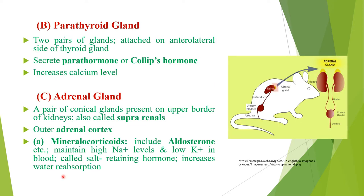Next is the parathyroid gland — two pairs of glands attached on the anterolateral side of the thyroid gland. This gland secretes parathyroid hormone, also called Collip's hormone, which increases the calcium level by increasing absorption of calcium from the intestine and reducing excretion of calcium in the urine.